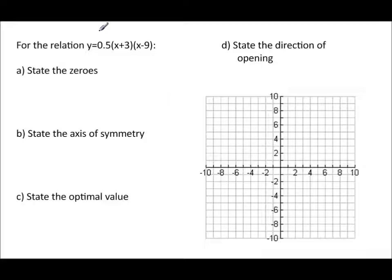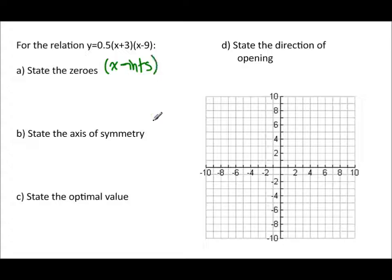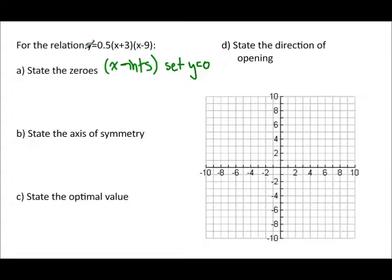For the relation y equals 0.5 times (x plus 3) times (x minus 9), we want to state the zeros. The zeros are the x-intercepts. So how do we find the x-intercepts? We set y equal to zero — take this y and make it zero.